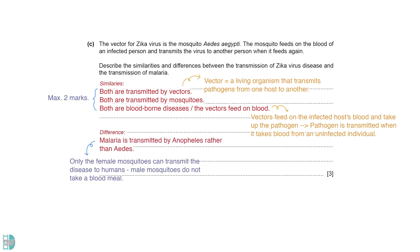You can get a maximum of two marks from these similarities. The vector of malaria is anophilis rather than aedes. Only the female mosquitoes can transmit the disease to humans, as male mosquitoes do not take a blood meal.